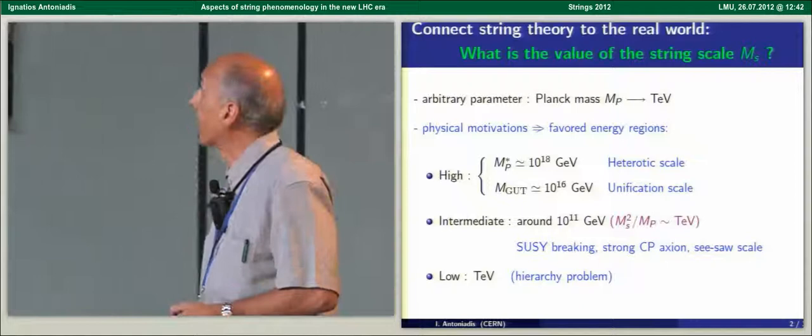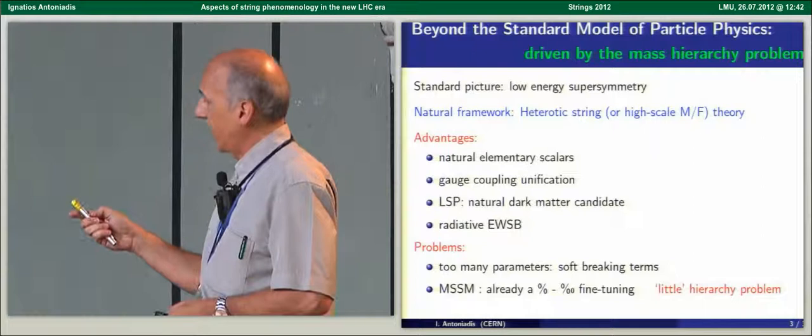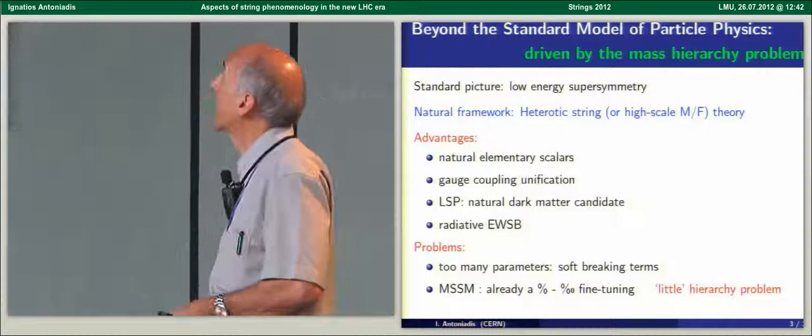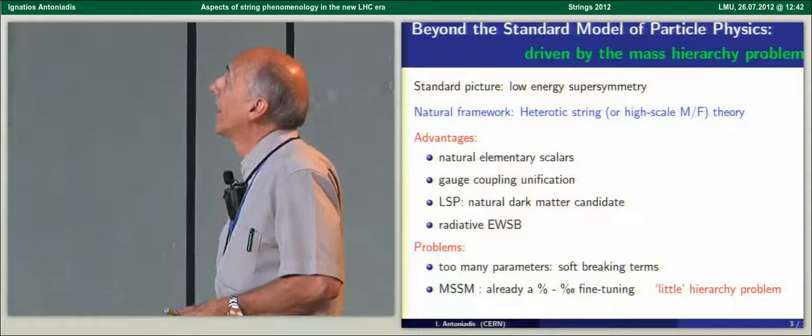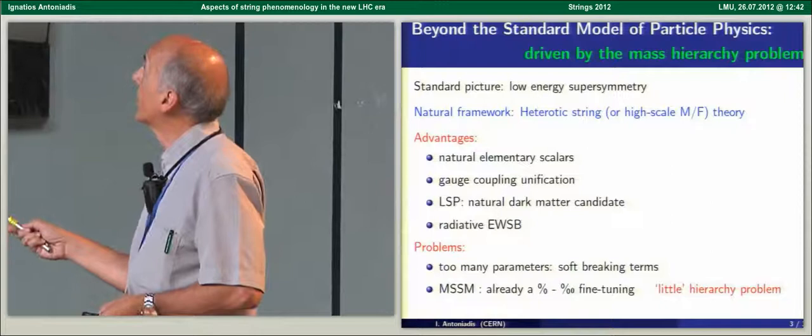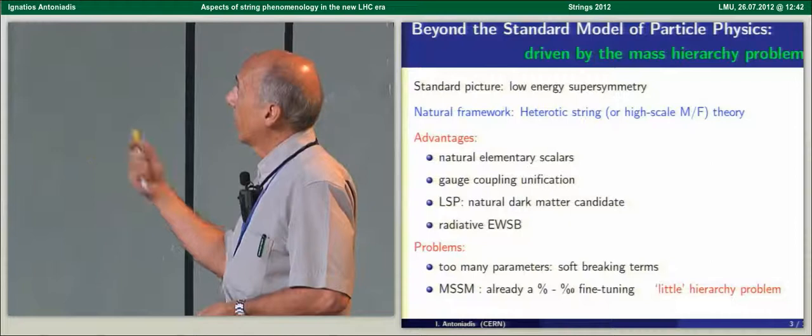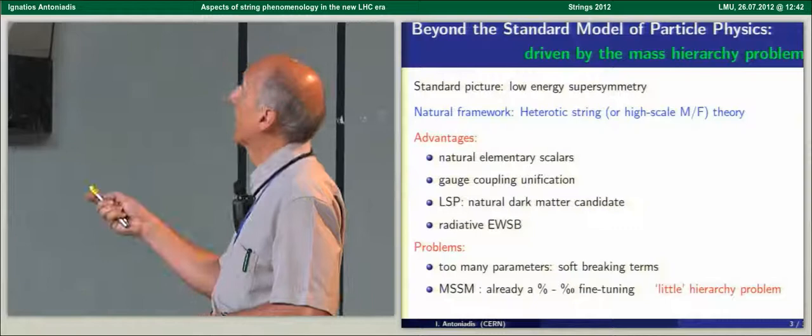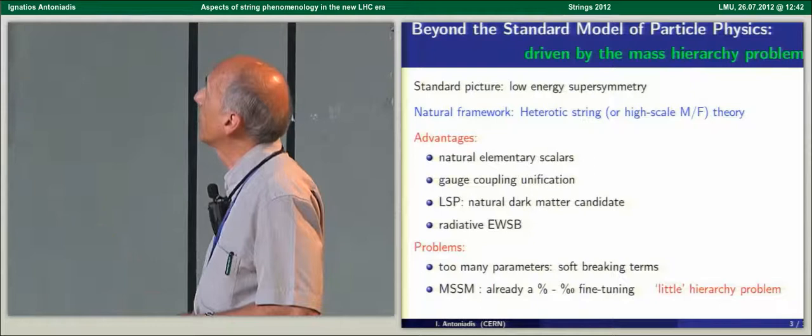On the other hand, physics beyond the standard model has been driven for many decades from the mass hierarchy problem. The standard answer is of course low energy supersymmetry, which combining all the properties that we want for supersymmetry, I think it's fair to say that the natural string framework is the heterotic string, either in the perturbative or in its non-perturbative versions like M-theory.